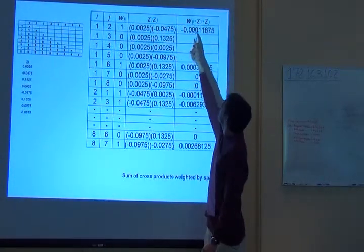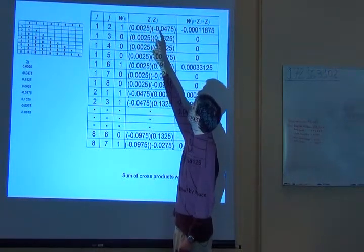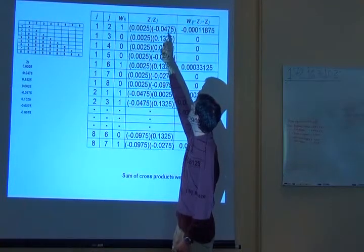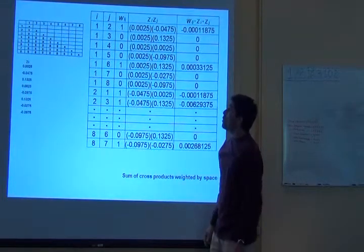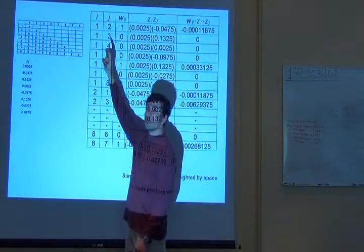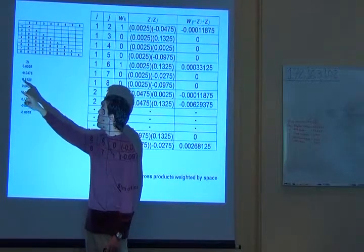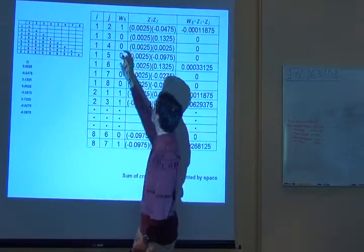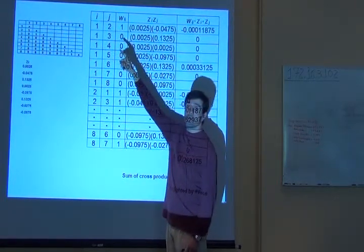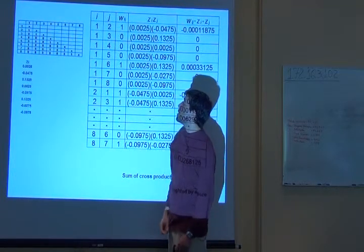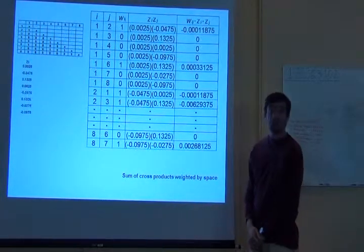Then the result is this, which is 0.0025 times minus 0.1475 times 1. Now I'm going to multiply 0.025 times 1.325. Here they are. And then I'm going to multiply that by their connection. What is their connection? 0. Any number multiplied by 0? 0.